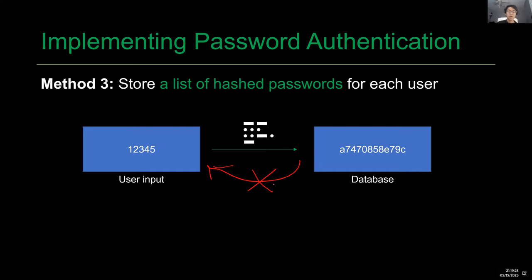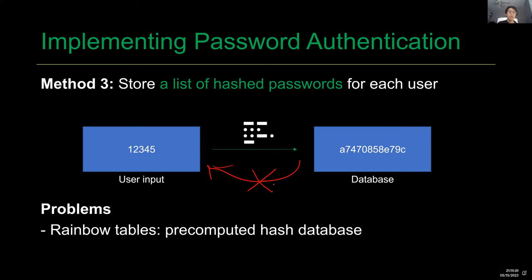This is much better than the last method, but there is a problem: when the user uses a simple password like '12345', by definition '12345' will produce the same hash every time. So you can keep a pre-computed hash table known as a rainbow table, compare what's inside the database, and identify common hashes — knowing the common hashes reveals the common plaintext input. Better than the last two methods, but still not good enough.